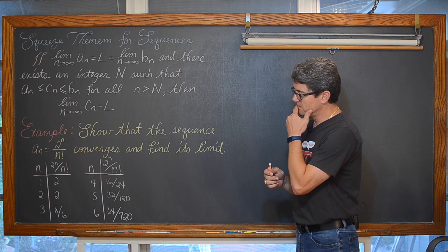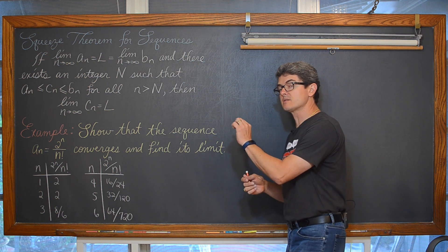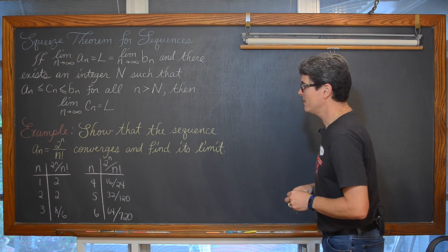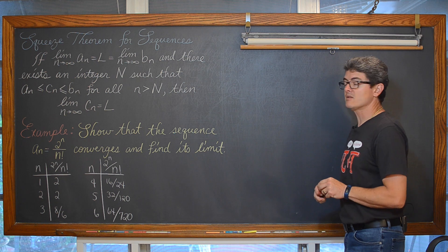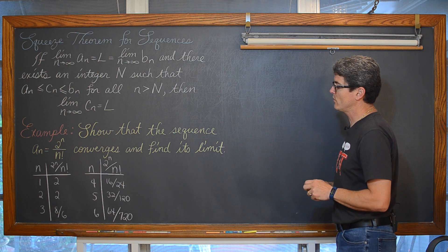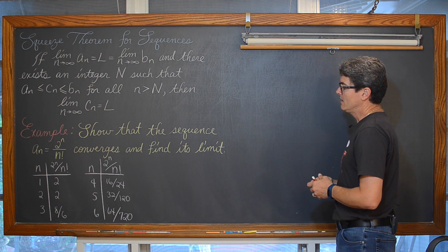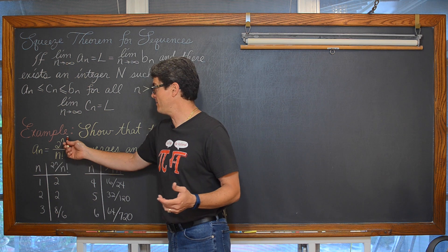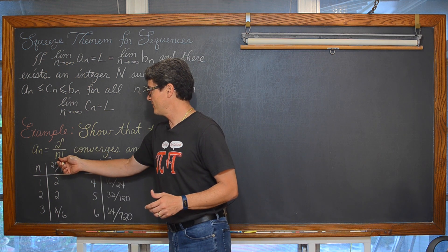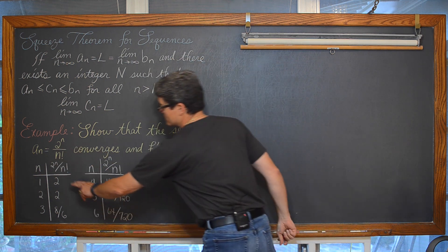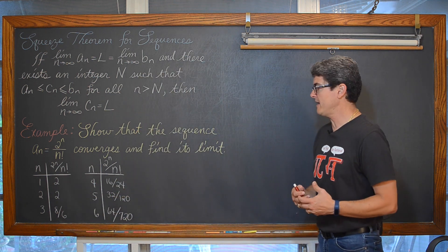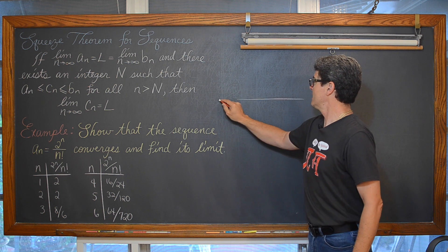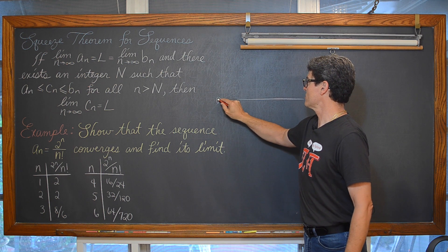Now because we can't necessarily easily evaluate the limit of that expression — maybe we kind of know the answer intuitively — but if we had to prove that the limit we believe it is, how are we going to do that? Well, 2 to any positive power is going to be positive, and these factorials will always be positive, so as we see these values of a sub n decrease, they are never going to become negative. And so we are going to create a lower bound of sorts, another sequence.